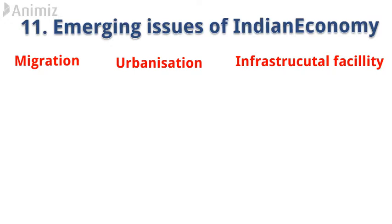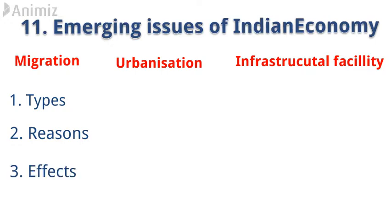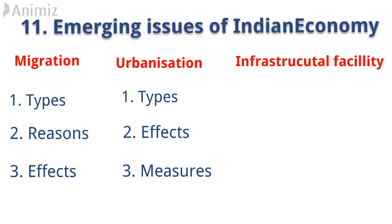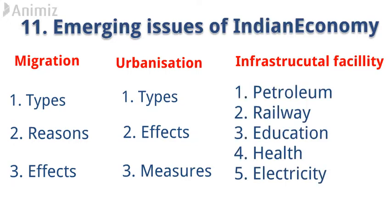Migration is further divided into types of migration, reasons of migration, and some positive and negative effects of migration. Urbanization is divided into three parts: types of urbanization, positive and negative effects, and measures the government should take to minimize the effects of urbanization. The third — infrastructure facility — has been divided into five parts: petroleum, railway, education, health, and electricity. All five are short note and very important questions.